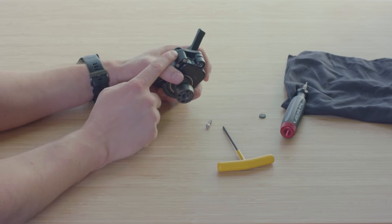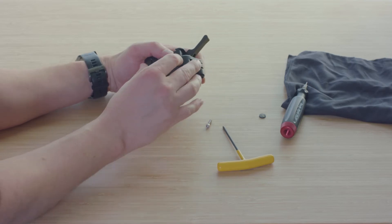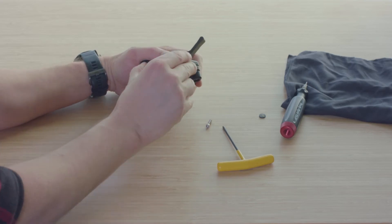Once that screw comes out, this lever, the main ball lock, is going to be able to lift up and come off.